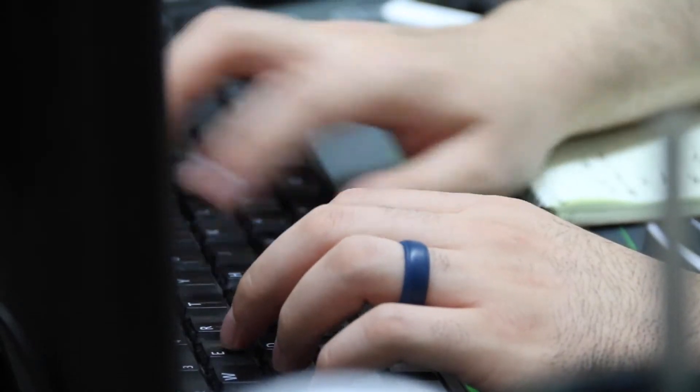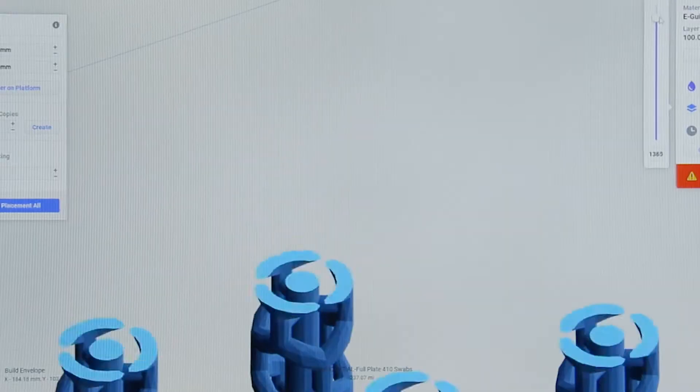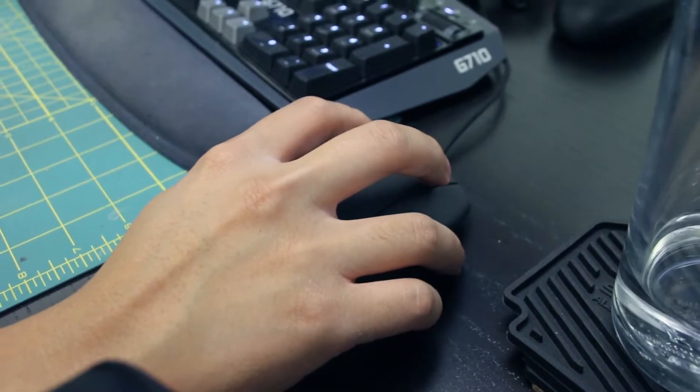Swab production begins with the importing of digital swab designs into E1RP software. The designs are arranged in the form of a build job before being sent to the Envision One to be 3D printed.